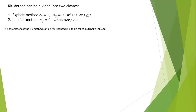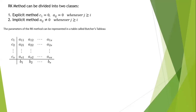The parameters of this method can be represented in a table called the Butcher tableau. Generally, this table is for the explicit method. This is the Butcher tableau for the explicit method. For this course, we are only going to consider the explicit method, where c₁ equals 0 and a_ij equals 0 whenever j is greater than or equal to i.